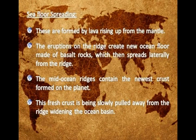Seafloor spreading features are formed by lava rising up from the mantle. The eruptions on the ridge create new ocean floor made of basalt rocks, which then spreads laterally from the ridge. The mid-ocean ridges contain the newest crust formed on the planet. This fresh crust is being slowly pulled away from the ridge, widening the ocean basin.